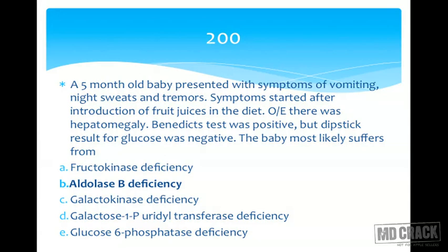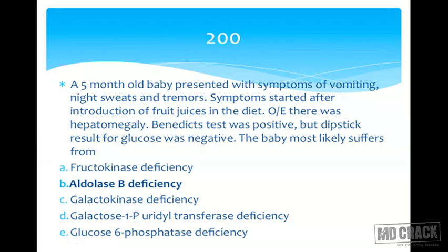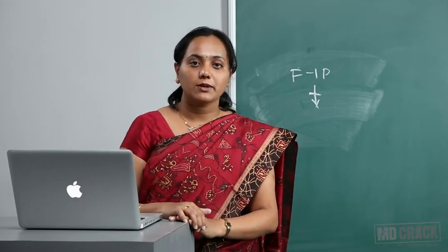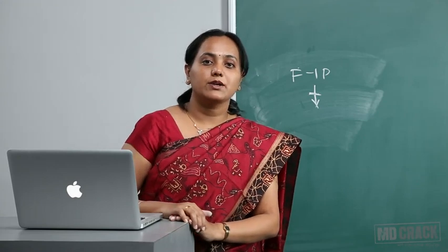Night sweats and tremors are hypoglycemic symptoms because fructose-1-phosphate sequesters inorganic phosphate, inhibiting glycogen phosphorylase, so glycogenolysis cannot occur. Symptoms started after fruit juices because fructose was not in the diet before. Hepatomegaly is from fructose-1-phosphate accumulation. Benedict's test is positive because fructose is excreted in urine, but dipstick for glucose is negative. The diagnosis is aldolase B deficiency. Best wishes for your examination in biochemistry.